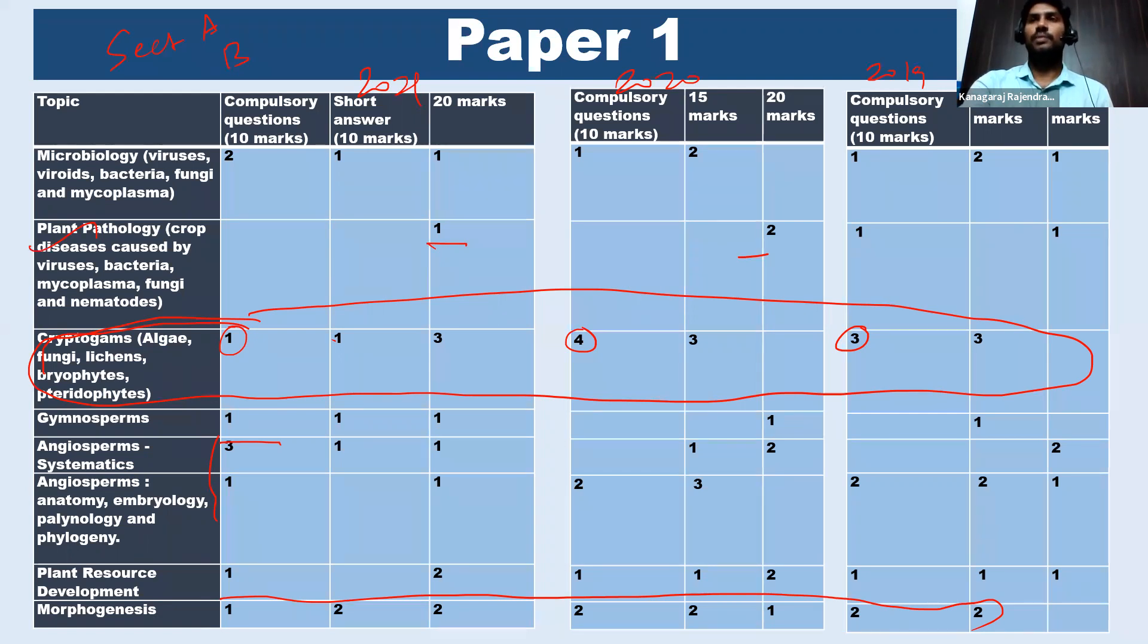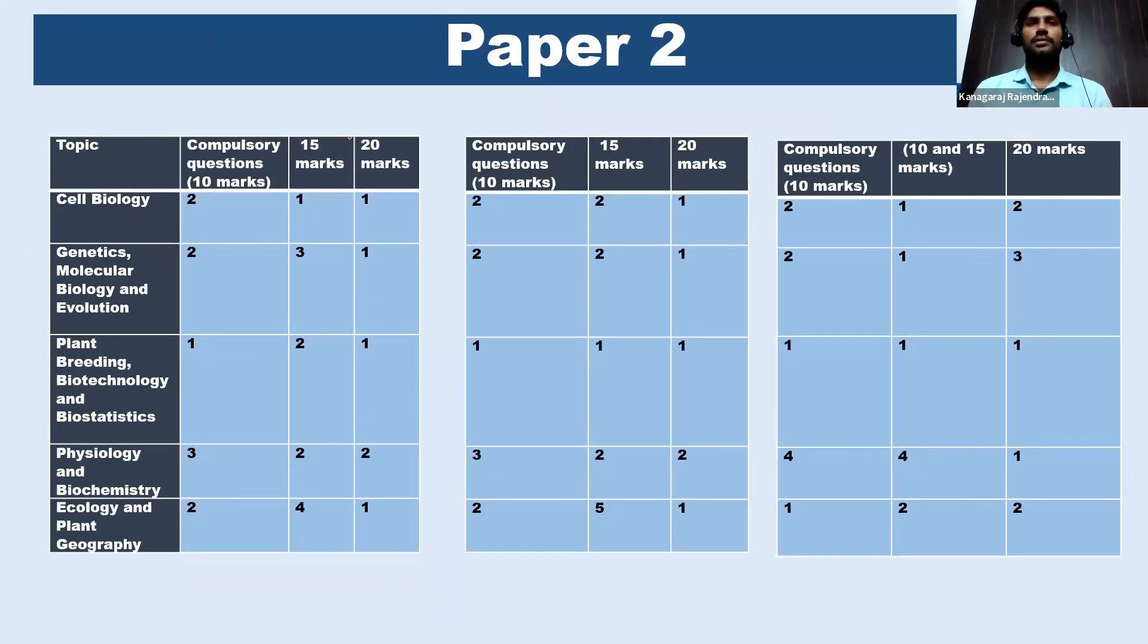So now we can move to paper two. So here in paper two, again, section A, section B, and these are the five subjects in paper two: cell biology, genetics, molecular biology and evolution, plant breeding and plant biotechnology, physiology and biochemistry, then ecology and plant geography. So in section A, here we can see a clear boundary between section A and section B. Section A is dominated by these three subjects: cell biology, genetics, plant breeding. So these questions in section A and section B, the questions are from physiology and ecology.